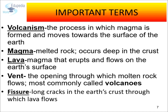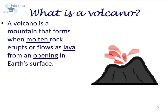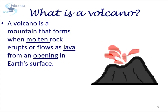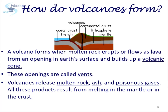A fissure is a long crack in the earth's crust through which lava flows. A volcano is simply a mountain that forms when molten rock erupts or flows as lava from an opening in the earth's surface and builds up a volcanic cone. Such openings are called vents. When volcanoes erupt, they release molten rock, ash, and poisonous gases. All these products result from melting in the mantle or crust.